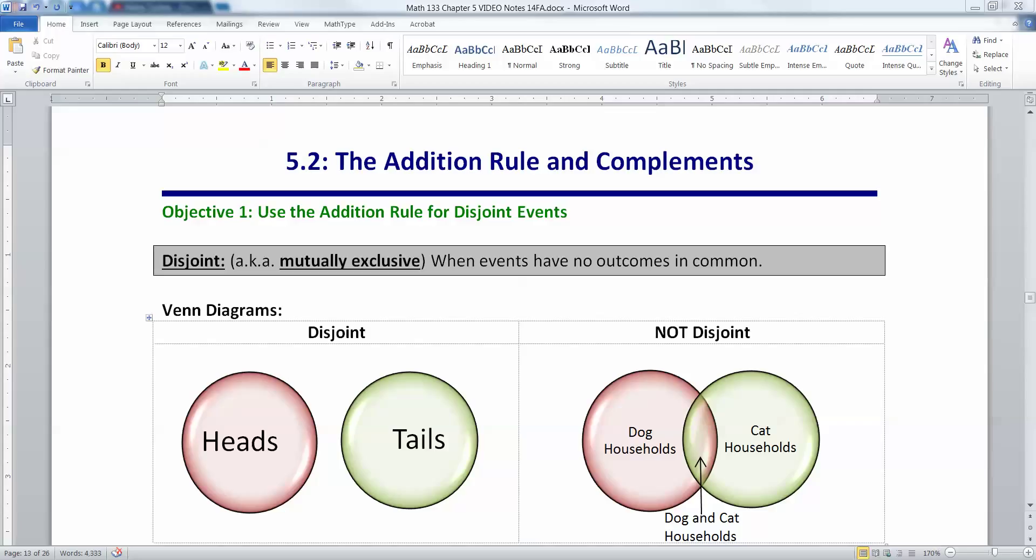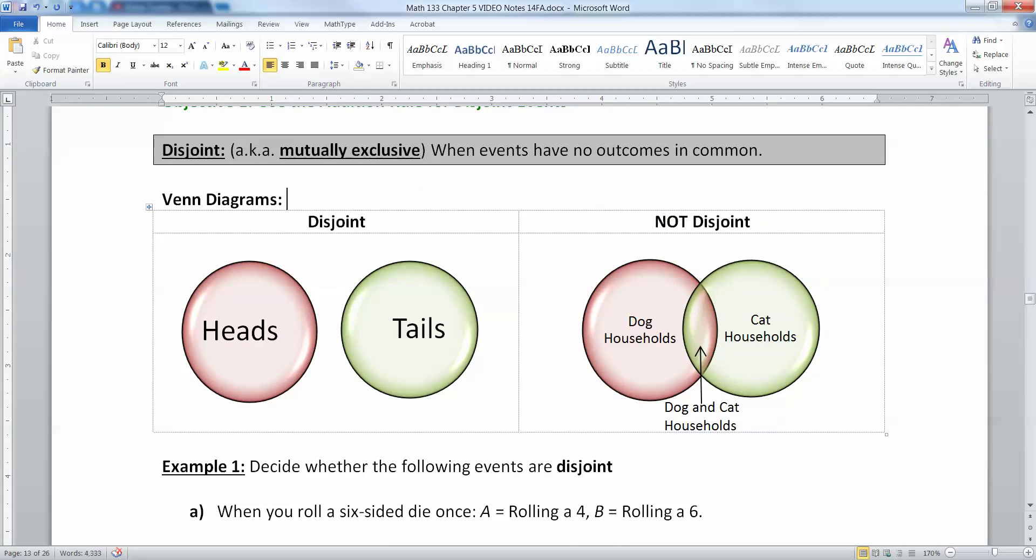Before we get into either of those things, we need to spend time with the definition of disjoint. Disjoint, also known as mutually exclusive, is when you have two events or more events that have no outcomes in common. I have here some pictures you can see, these are Venn diagrams. When you're tossing a coin you either have heads or you have tails. Those are disjoint. You cannot toss a coin and have it be both at the same time.